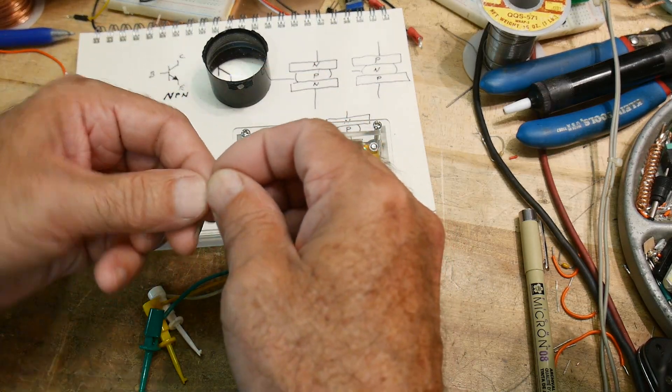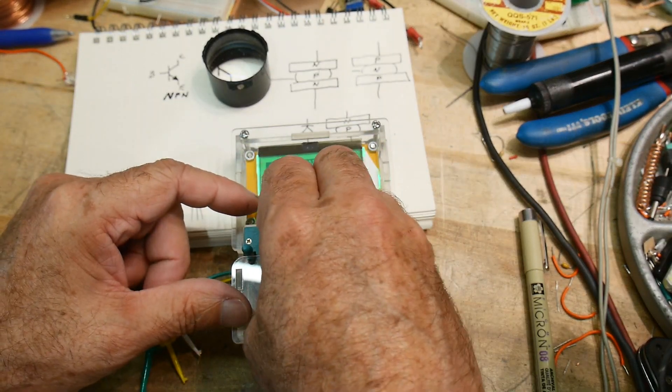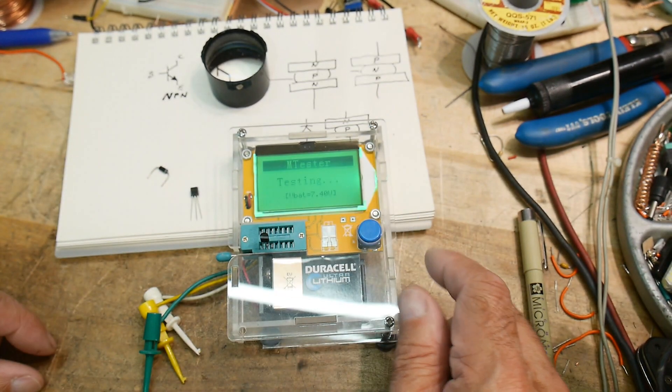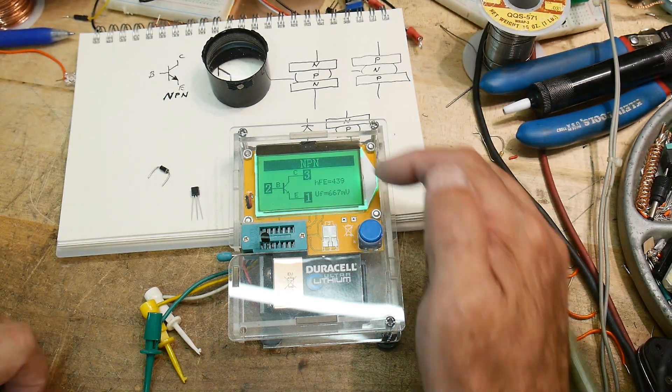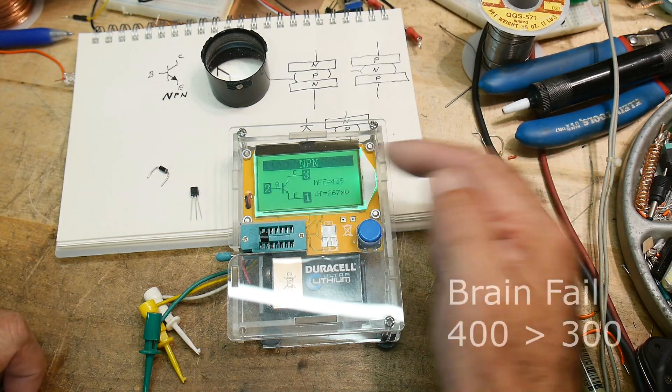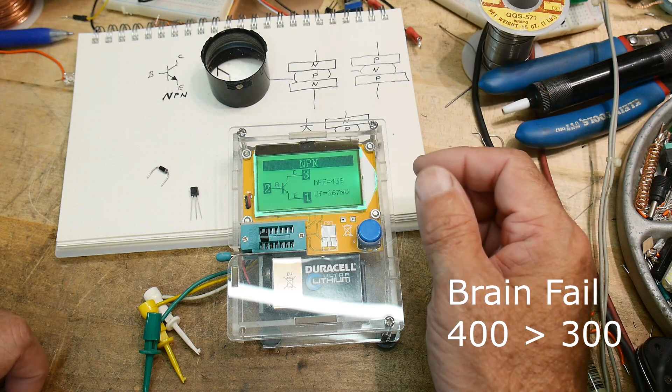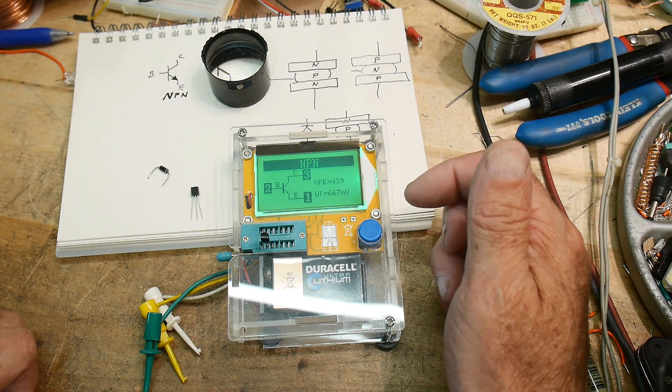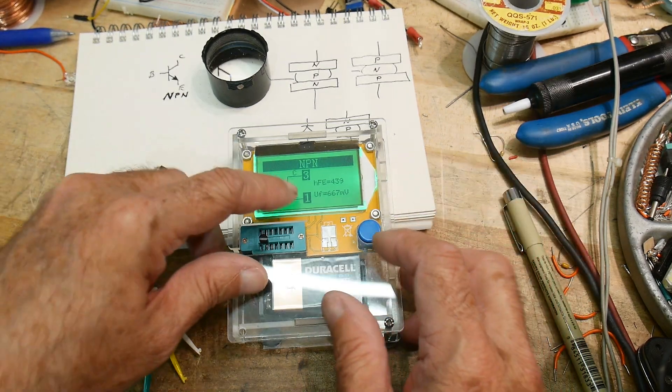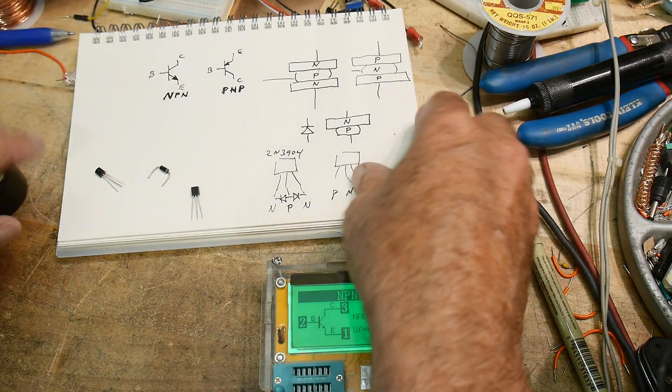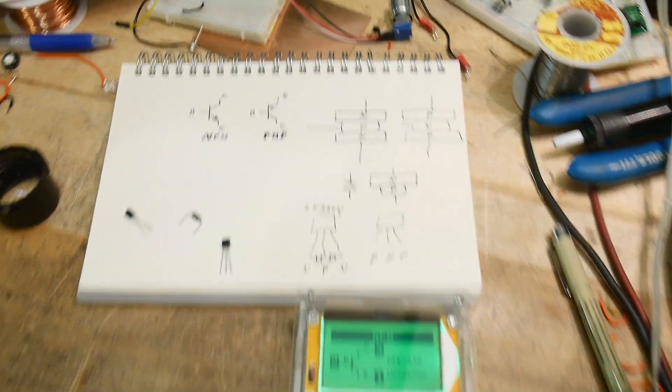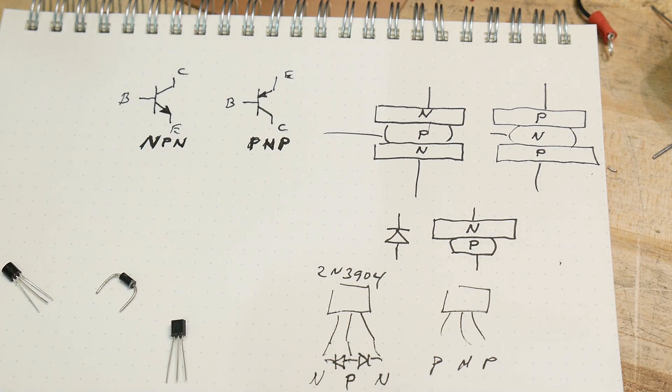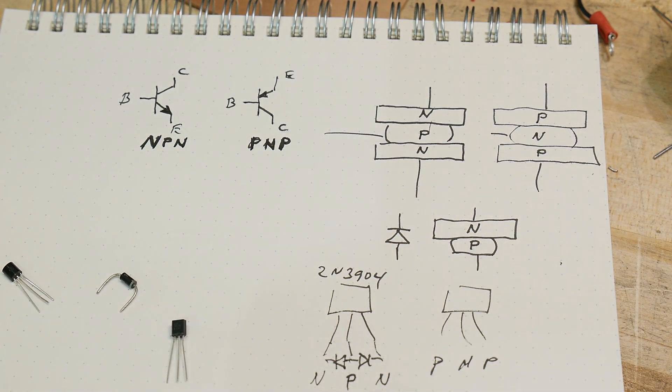And this one tests as an NPN. I know I use this thing like at least once a week. There we go. NPN. HFE is a little lower on this one, only 439. But the forward voltage, the VF is about the same, 0.66. There you go. How to test transistors and figure out what it is. And now everybody has got to go run out and buy some Oreos because they're hungry. There you go.